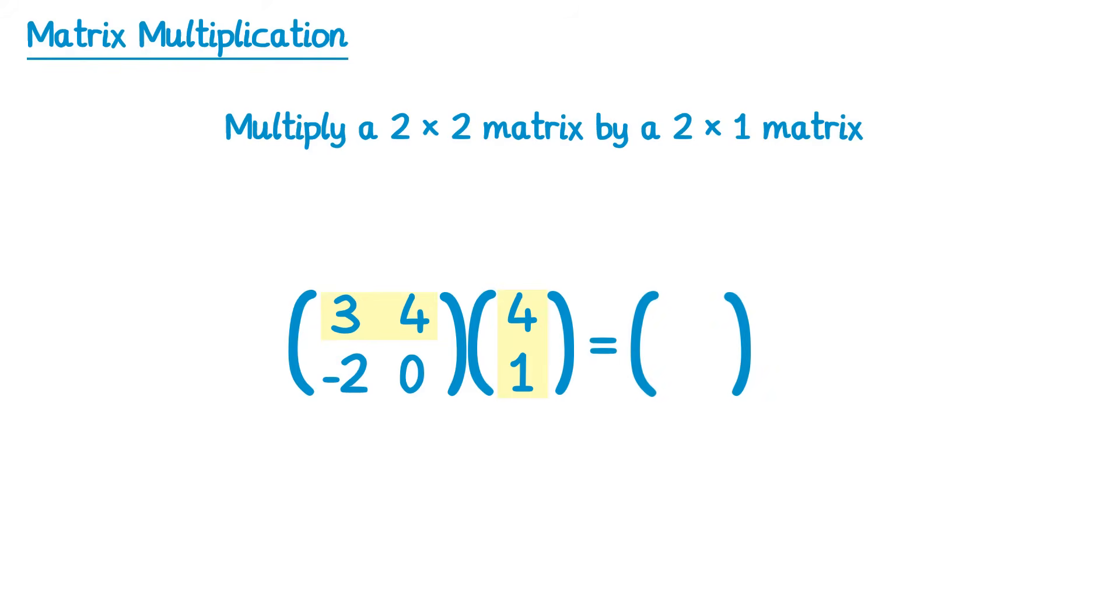So what we do is we look at this row and this column that we've highlighted, and we match up the numbers. So the first one here we've got 3, and we're going to match that up with the first one on the second matrix, which is 4. And you multiply these. So 3 times 4 gets you 12. You then do the same thing but with the second numbers in each. So we've got 4, that's the second number in this row, and 1, that's the second number in this column. You do 4 times 1, which is 4, and you add that on. So we've got 12 from the first multiplication, 4 from the second multiplication, and 12 plus 4 makes 16.